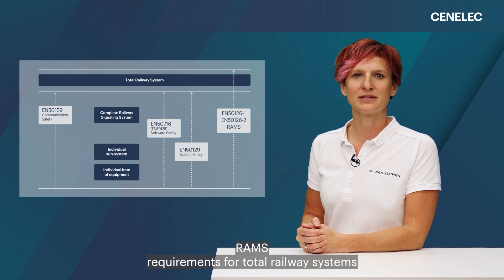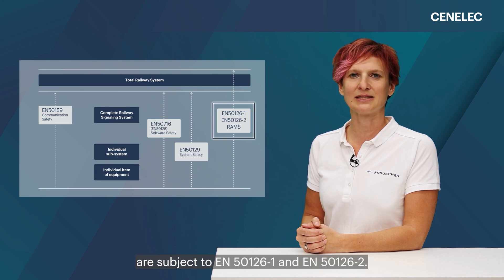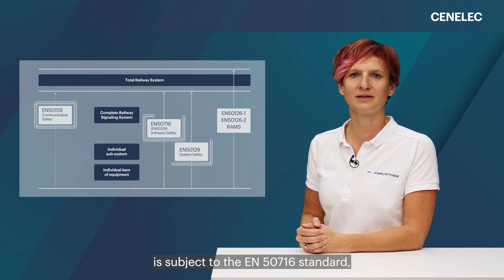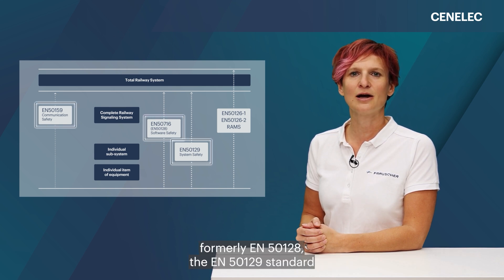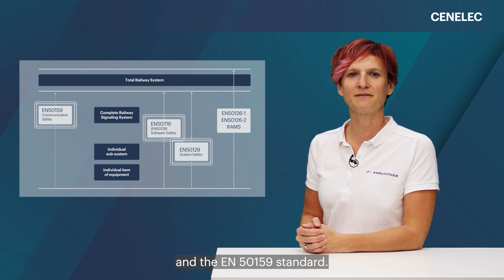RAMS requirements for total railway systems are subject to EN 50126-1 and EN 50126-2. The complete railway signalling system is subject to the EN 50716 standard, formerly EN 50128, the EN 50129 standard and EN 50159 standard.